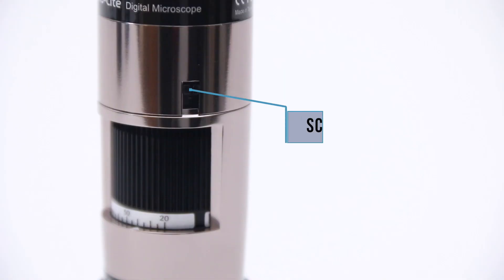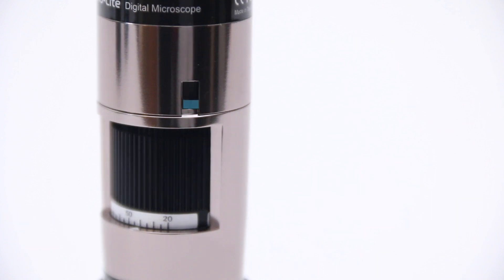Next you'll see the scroll lock feature. Once you have the magnification fixed where you want it, simply slide this down to lock it in place and the magnification will no longer be able to be adjusted.